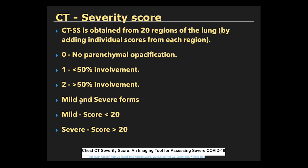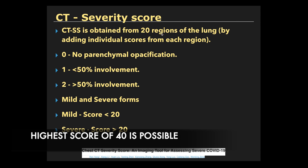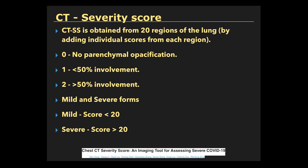We add up all the segmental regions in both lungs. When the total score is less than 20, it is said to be a milder form. When the total score is more than 20, it is said to be a severe form. A maximum score of 40 is possible when all 20 segmental regions have more than 50% involvement.